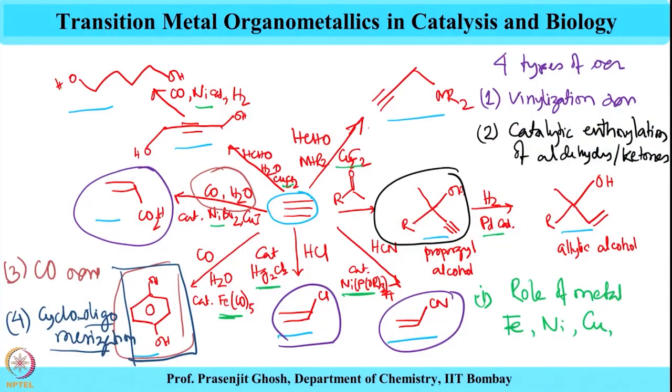All of these reactions require some sort of metal catalyst, which is where the organometallic chemistry comes into play. The metal catalysts used in Reppe synthesis — iron, nickel, copper, first-row transition metals — are economical and effective. The four types of reactions are: vinylization, catalytic ethynylation of aldehydes or ketones (an addition reaction), CO reactions, and cyclo-oligomerization where one can form benzene derivatives or even higher cyclo-tetraene derivatives from acetylene.